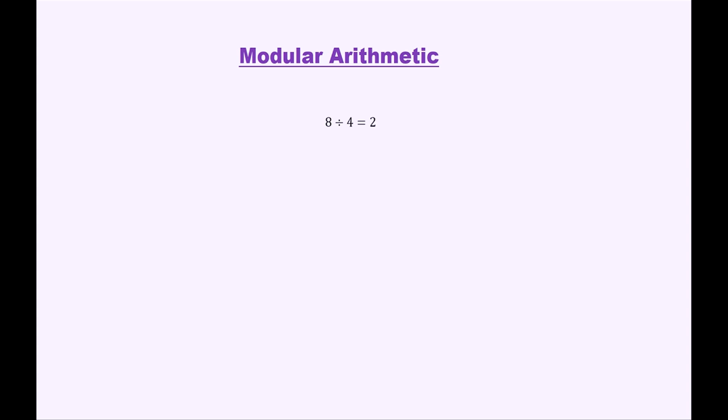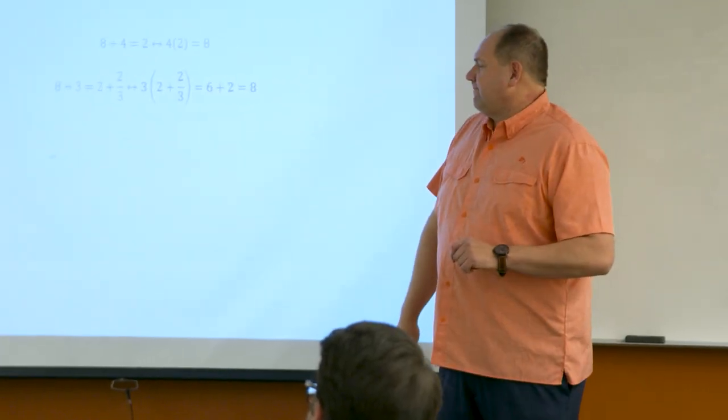So let's start small. If I have 8 divided by 4, that's equal to 2 — 4 goes into 8 exactly two times. And if I think about 8 divided by 4 equals 2, that's the same thing as saying 2 times 4 equals 8. A little bit harder: 8 divided by 3 equals 2 plus 2 thirds, or 2 and 2 thirds. That's because 2 and 2 thirds times 3 simplifies to 6 plus 2, which is 8.